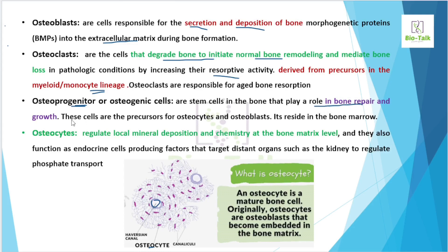Osteogenic cells are mainly important for bone repair and bone growth. They derive into osteocytes and osteoblasts. Osteocytes regulate local mineral division — phosphate and calcium balance. Osteocytes can send signals to organs such as the kidney. The diagram of an osteocyte within bone matrix will be shown for clarity.